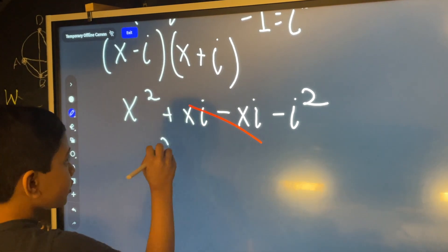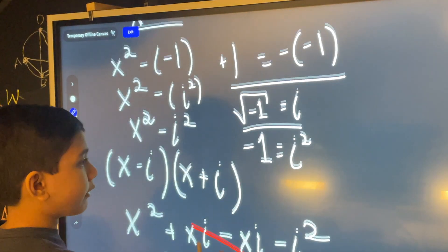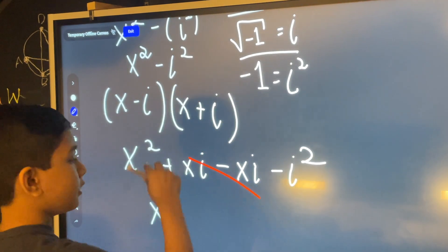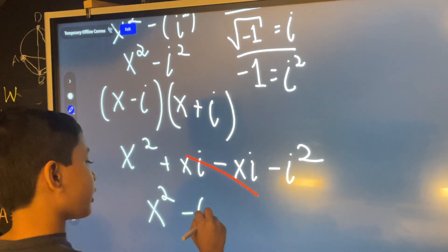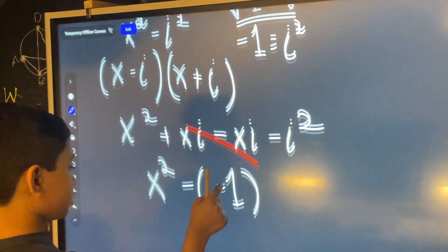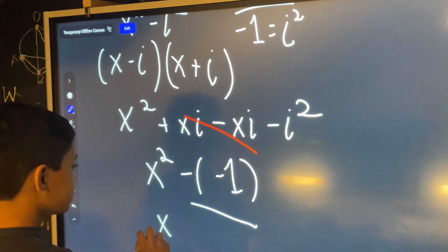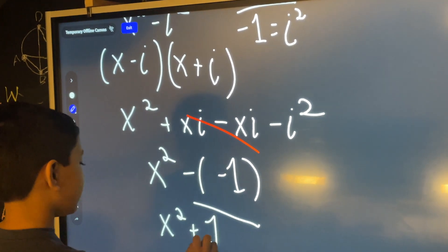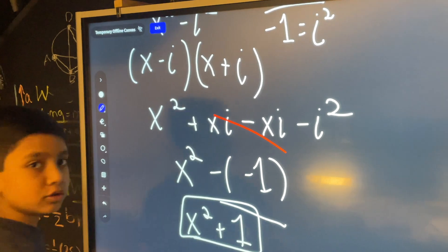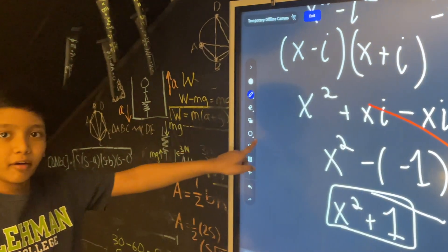Because if you remember our equation up here, then you will remember that i squared was negative one. You will also remember that this simplifies to positive one. And that gives us our answer for factoring. Thank you, everybody, for watching.